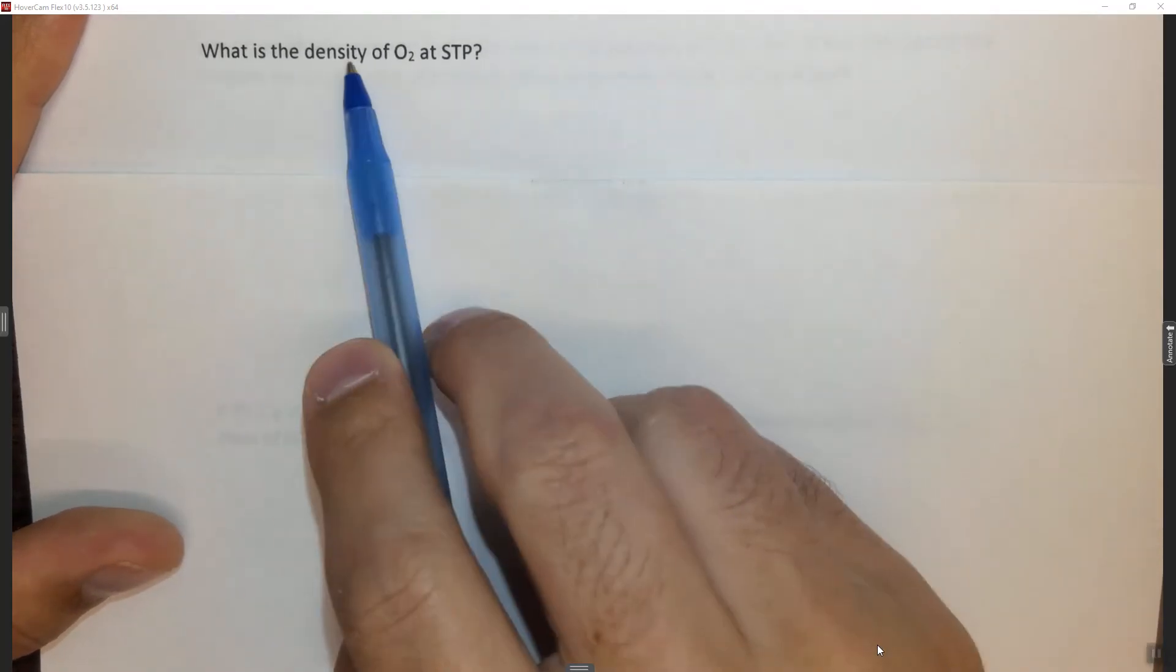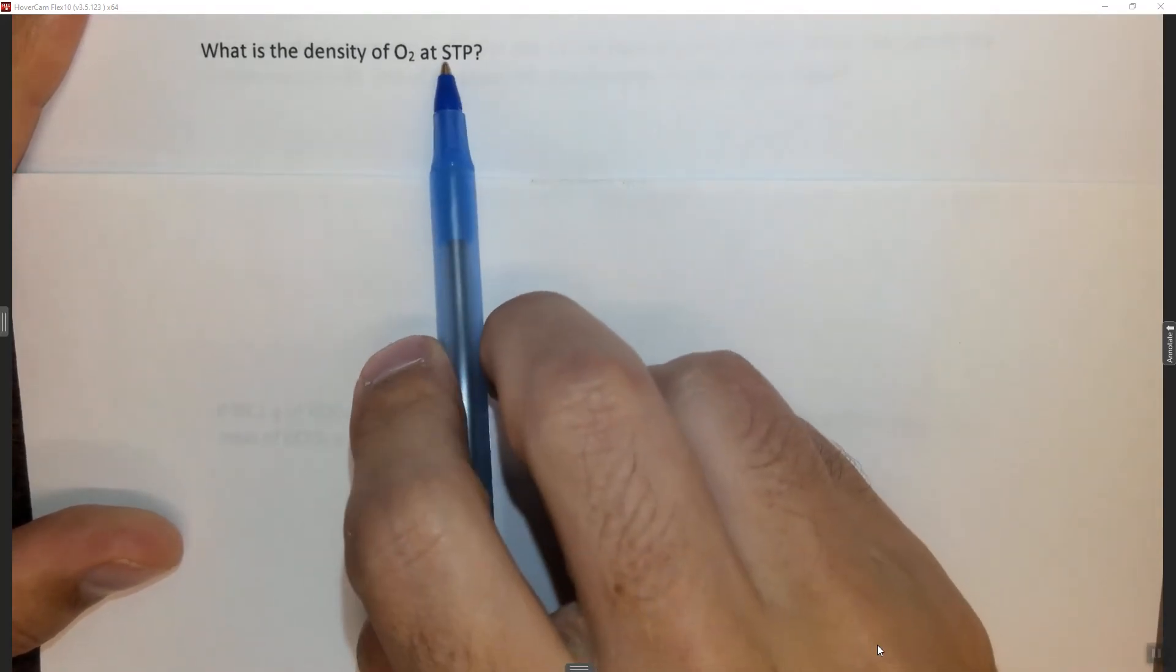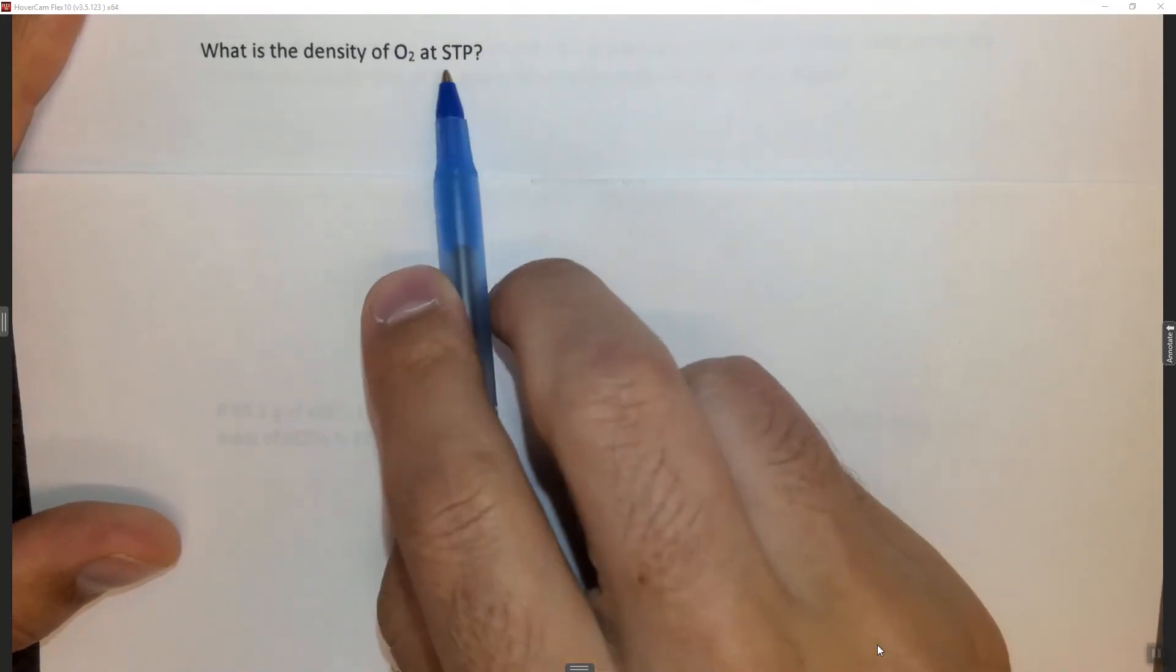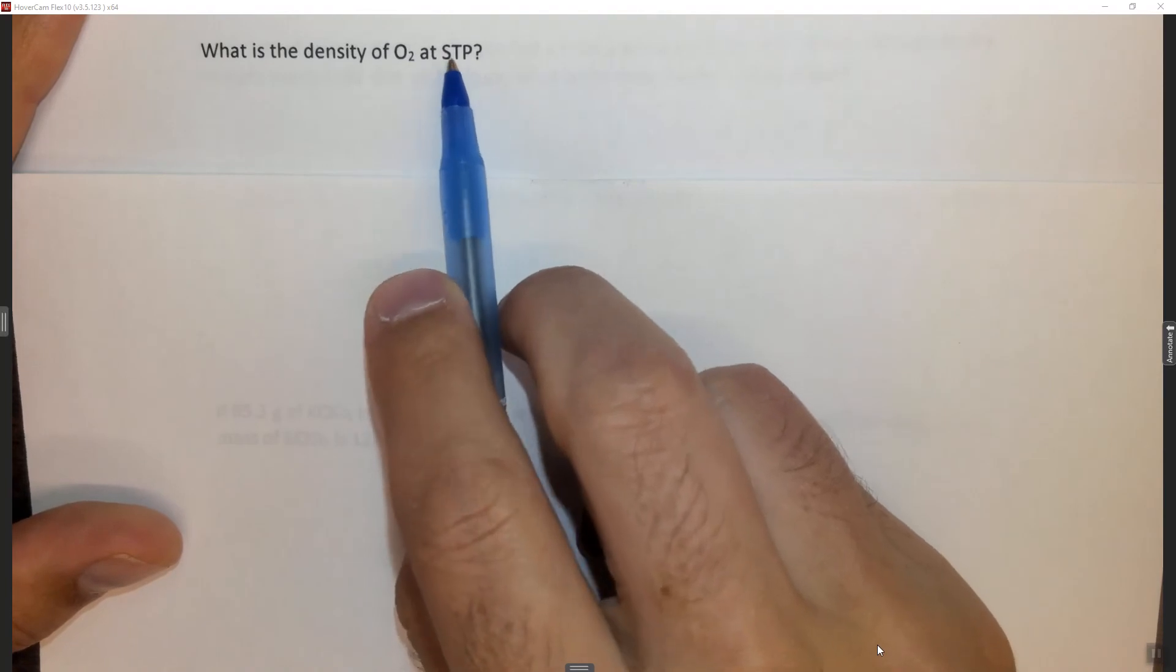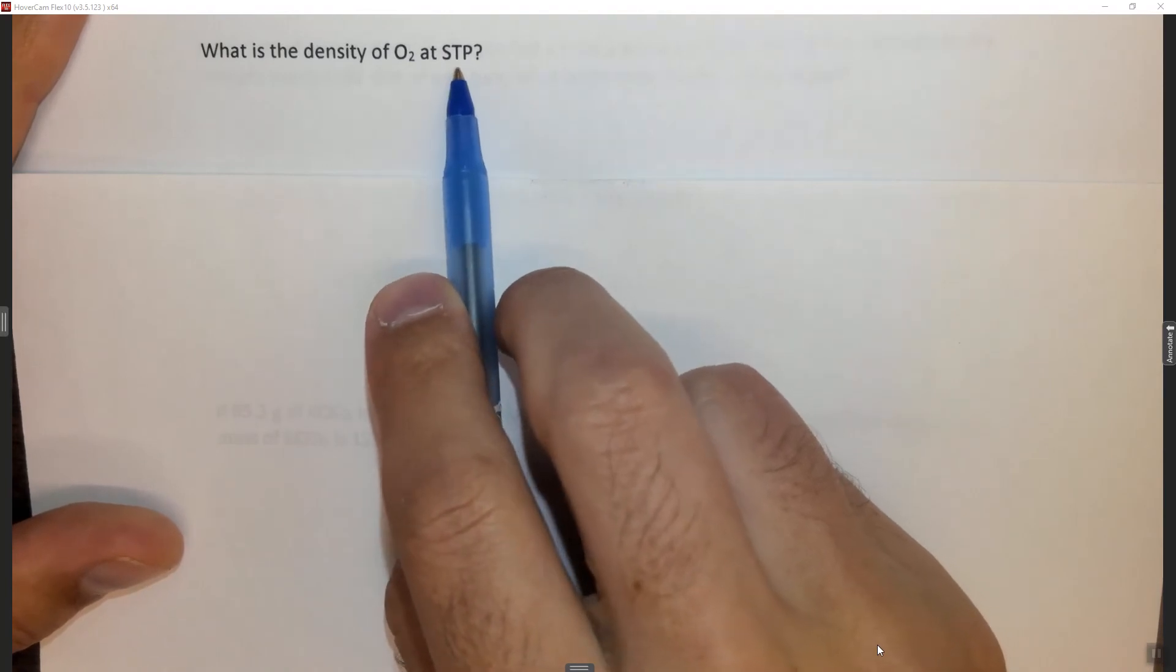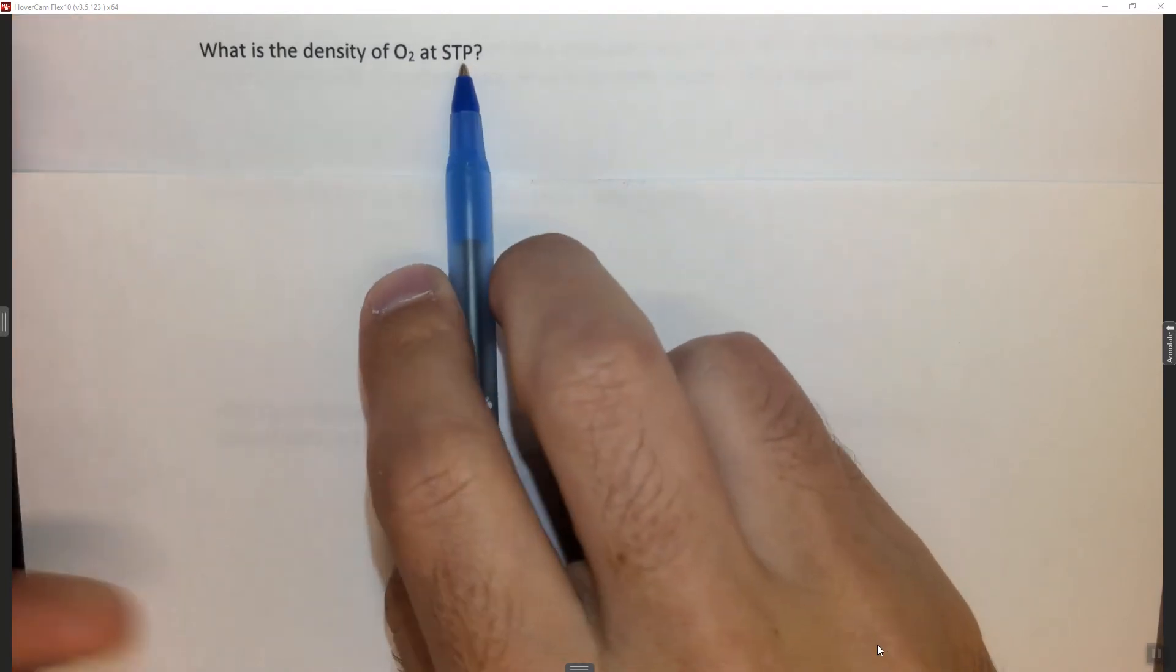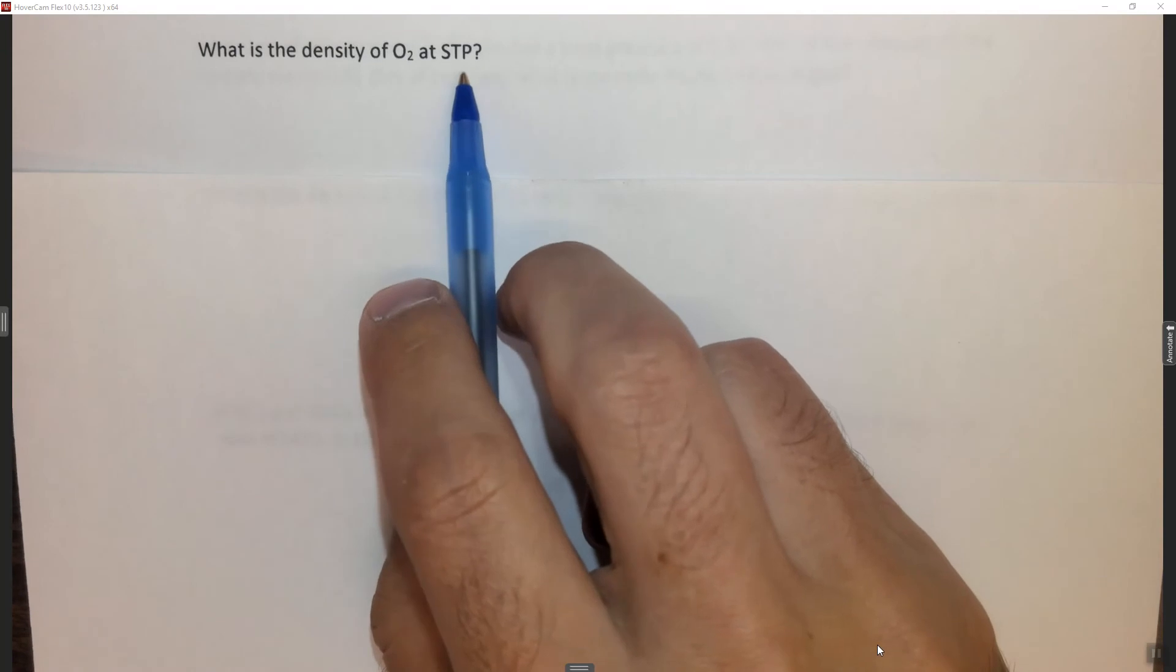The question says what is the density of oxygen at STP? STP is standard temperature and pressure. The standard temperature is 0 Celsius or 273 K and the standard pressure is 1 atmosphere.